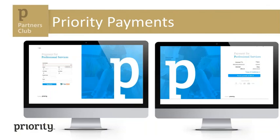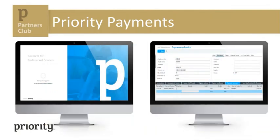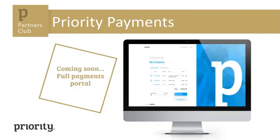We took the solution one step ahead and now present the Click to Pay service. Priority customers — meaning your customers — can now allow their own customers to pay by credit card directly from the invoice sent to them from Priority. The Priority customer can define the relevant customers and have a QR code printed on a printed invoice, or if it's a digital invoice, a link. By clicking on that link or scanning the QR code, the end customer is transferred to a secured payment page where they see the vendor's name and the invoice details. On the next page they enter the credit card details. At the end of the payment process the user gets a notification for successful payment and a reference number. On the back office, an interface creates a receipt in Priority linked to the relevant invoice.